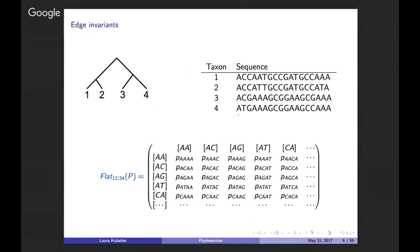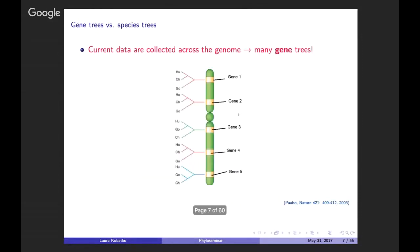[Connection restored] We had just seen about edge invariants and the flattening matrix. Now we move into what's different between this talk and Marta's: we're going to focus on estimating the species tree versus the gene trees.